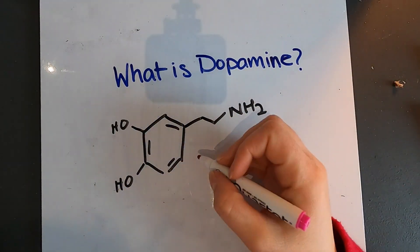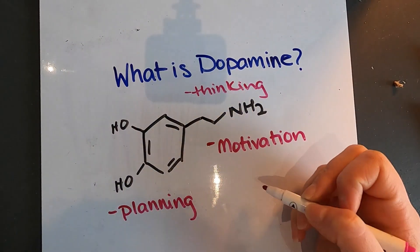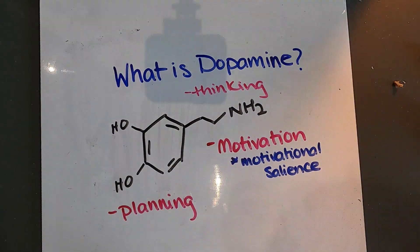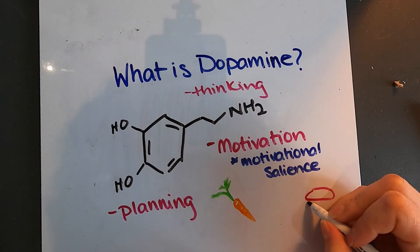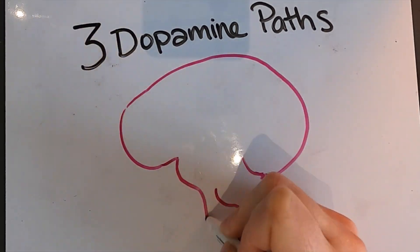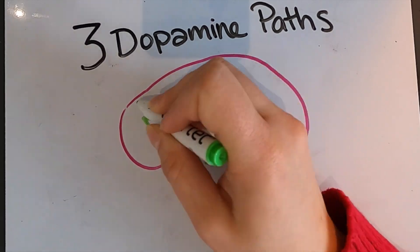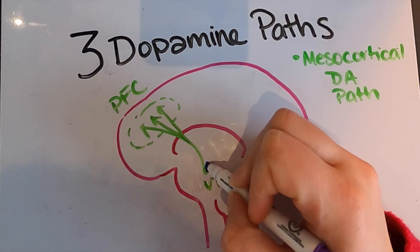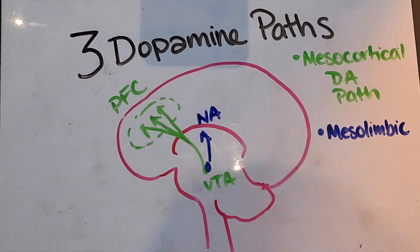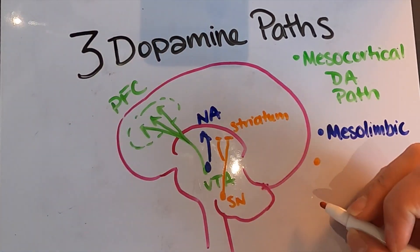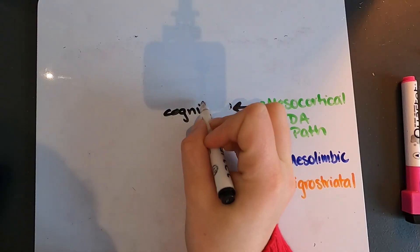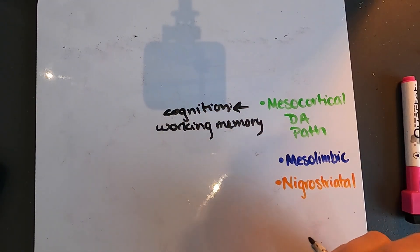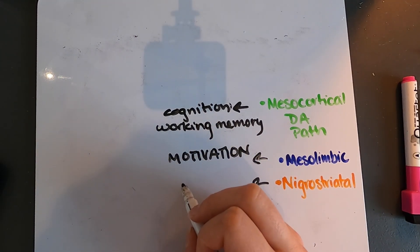A lot of these messages include information for motivation, for planning, and for different aspects of thinking. Importantly for motivation, it has to do with motivational salience — the amount of salience attached to maybe a carrot compared to a cupcake. On top of that, there are three important pathways in our brain that require dopamine. These three dopaminergic pathways include the mesocortical dopaminergic pathway, which connects the ventral tegmental area to the prefrontal cortex, the mesolimbic dopaminergic pathway that connects the ventral tegmental area to the nucleus accumbens, and the nigrostriatal dopaminergic pathway that connects the substantia nigra to the striatum.